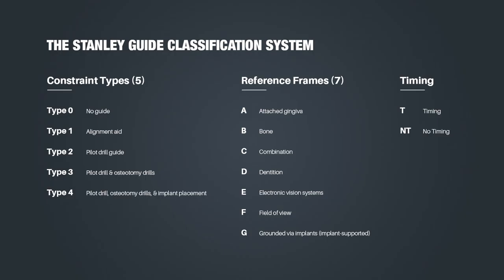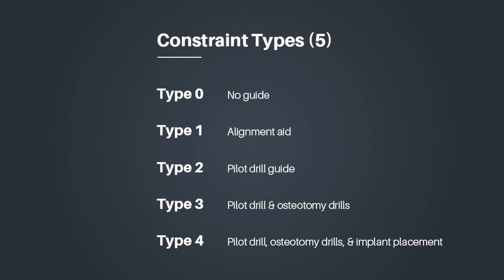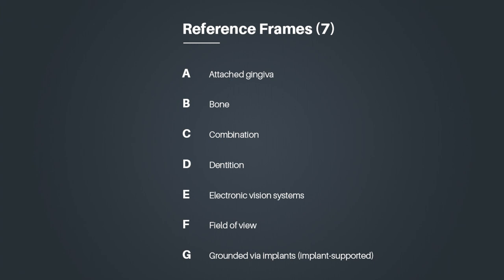Using this system is simple. Choose a constraint type from the column on the left — hopefully type 4 — and then choose a reference frame. Constraint types refer to what the guide actually constrains, such as pilot drills, osteotomy drills, and implant placement. Reference frames refer to the base your guide sits on. These can be attached to gingiva, dentition, implants, and more.